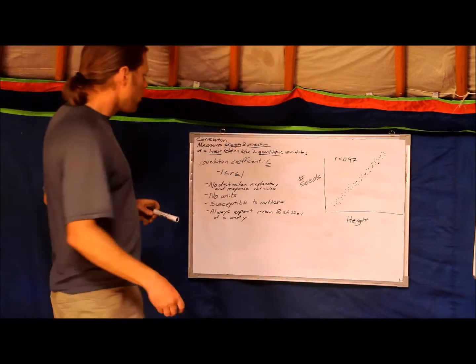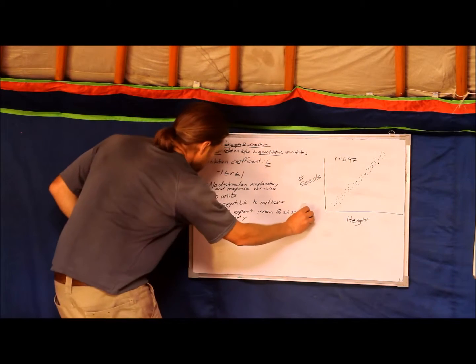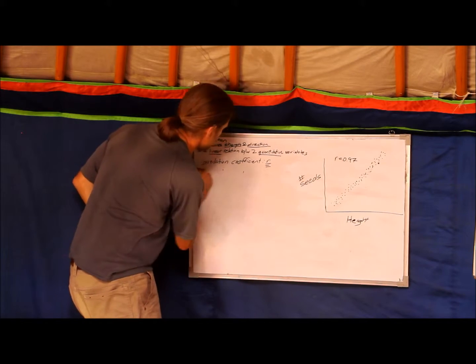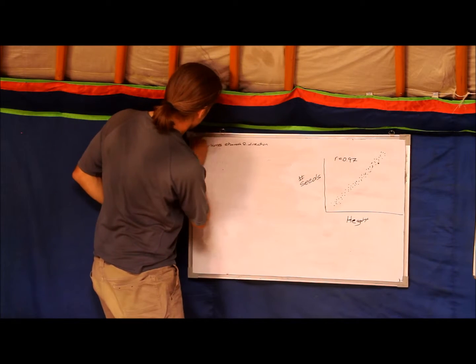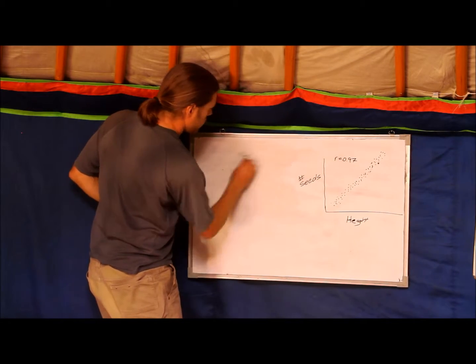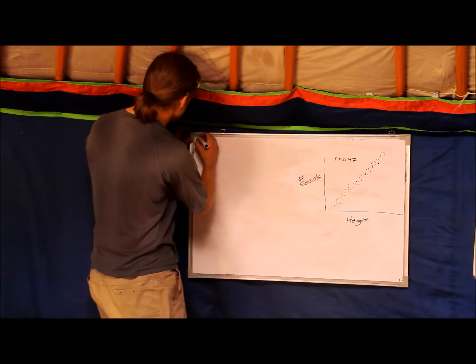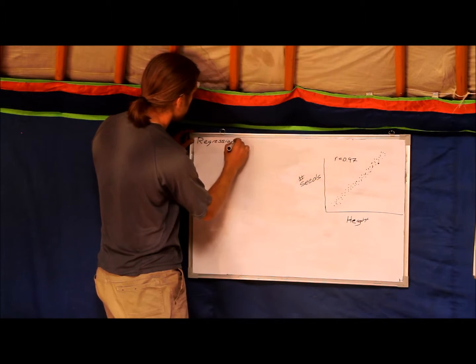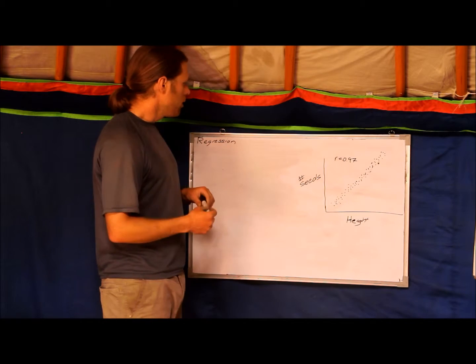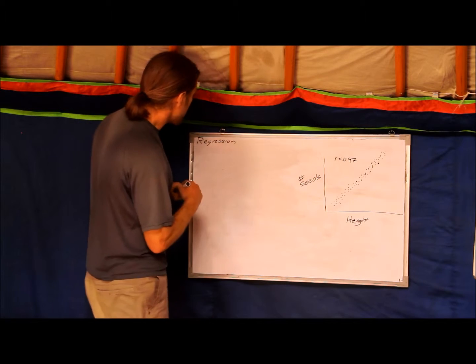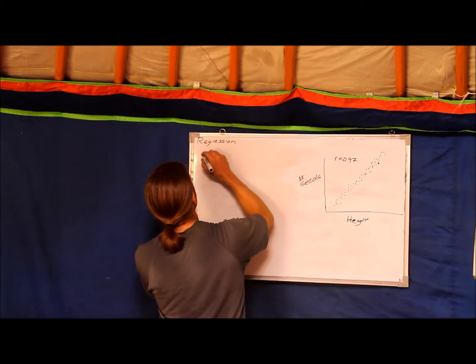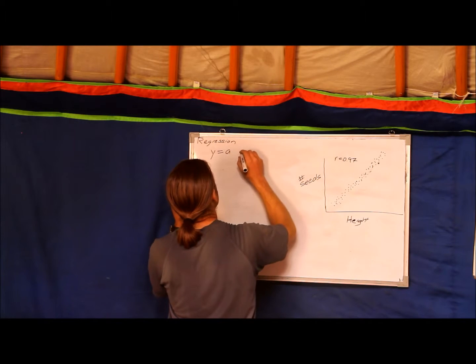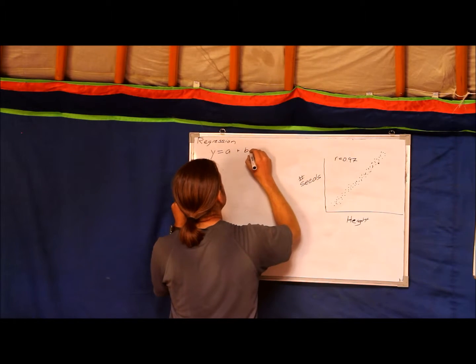We're going to move on to regression. Regression is closely related to correlation but is different. Regression is a linear relationship between two variables which are described by this equation. It's a linear relationship but it's an actual line which is described by Y equals A plus B times X.